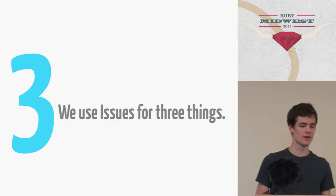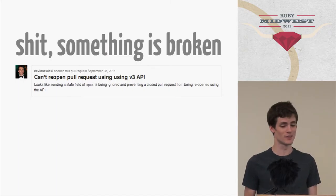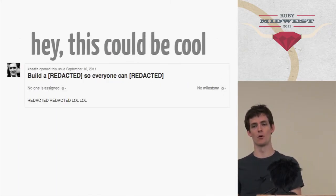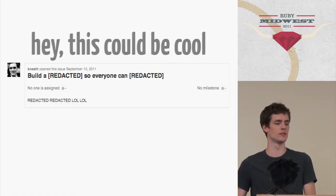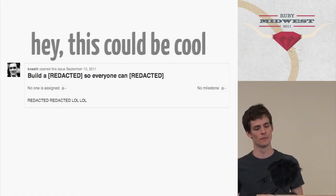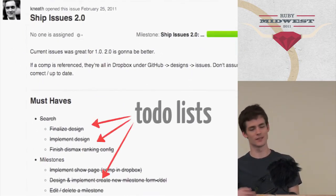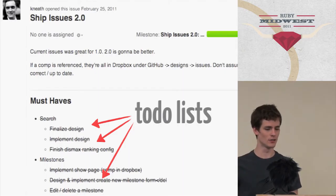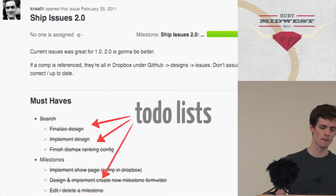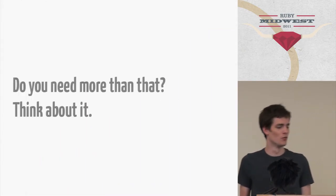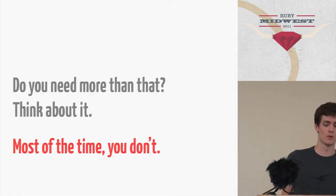We use issues for three things. First, something is broken — that gets fixed in a few hours. We also use issues a lot for 'wouldn't it be cool if' — it's another place to have a discussion prior to the pull request because you don't want to throw it into code yet, but it's fun to talk about. We also use it as a to-do list sometimes — you don't have to set up a weird issue tracking to-do board. It's all just in one issue. Do you need more than that? Really think about that, because most of the time you don't. Simple tools means a better product because you can build it simpler.